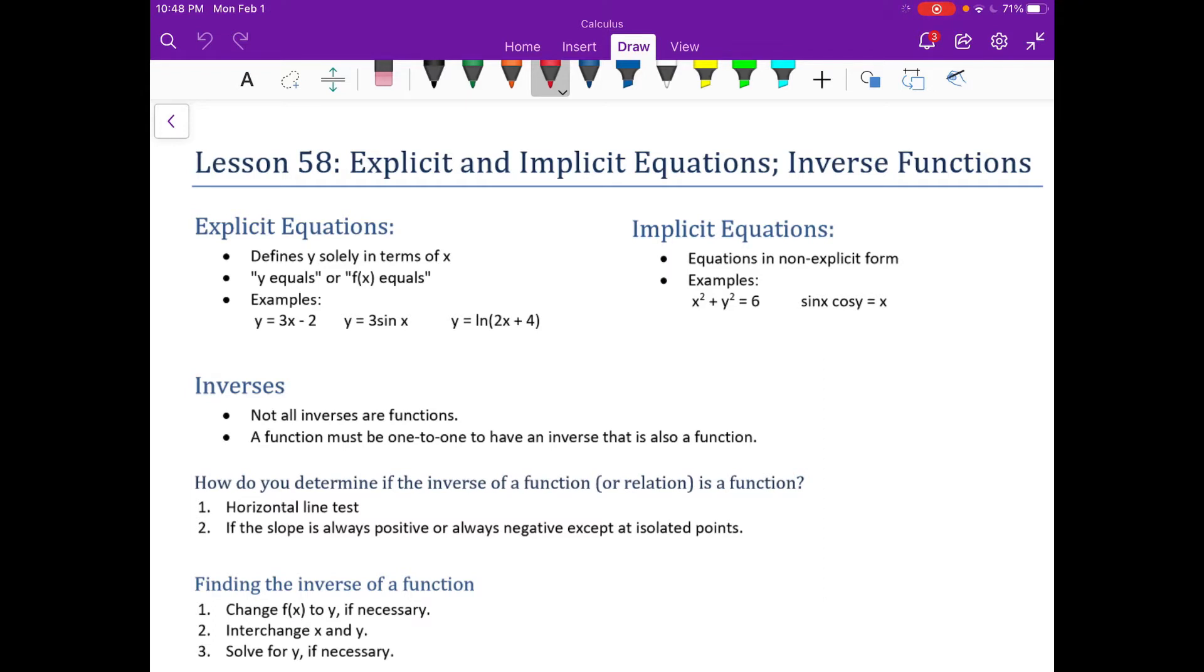If the slope is always positive or the slope is always negative, except at an isolated point, then it is one to one, and it would have an inverse.